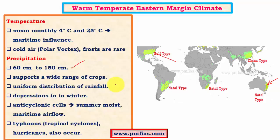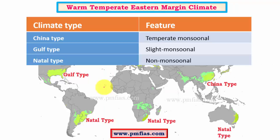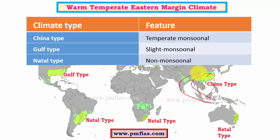Most of the rainfall in this region occurs due to anticyclonic cells. Coming to regional variations, there is one important characteristic related to monsoonal influence. The Gulf and China types experience monsoonal variation — China type sees seasonal reversal of winds and is called temperate monsoonal climate, while the Gulf type has slight monsoonal influence. In summer the winds flow in one direction and during winter they are reversed. This monsoonal characteristic is totally absent in the Natal type of climate.